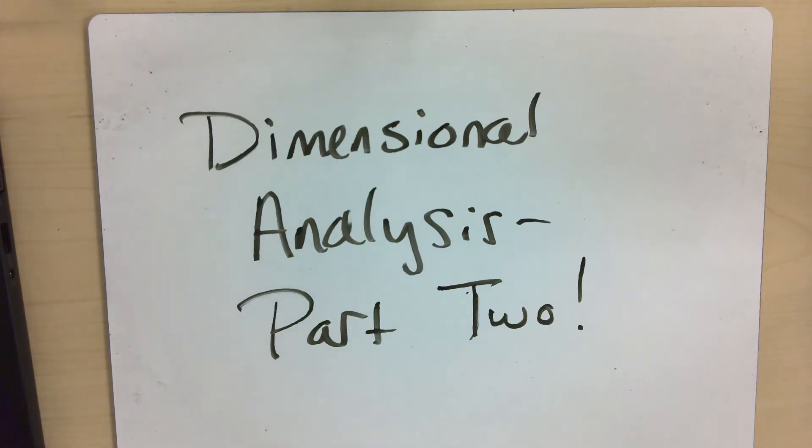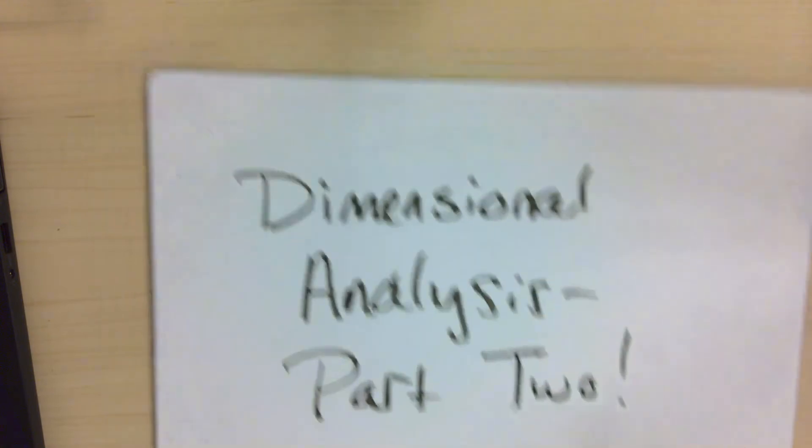So for one-step problems, honestly, you probably know other ways to convert the units that might be just as easy for you. But in unit six, when we do stoichiometry, we're going to do problems that have three and four steps sometimes. And so I'm going to show you how to use dimensional analysis to do multi-step conversions, because this is where it's going to be really helpful to you.